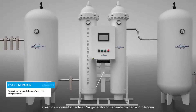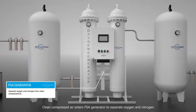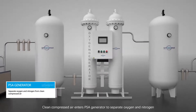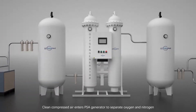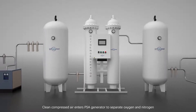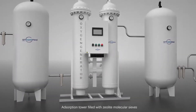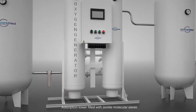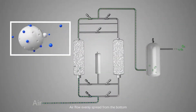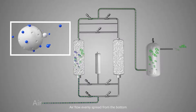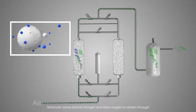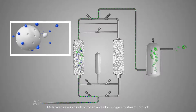Clean compressed air enters the PSA generator to separate oxygen and nitrogen. The absorption tower is filled with zeolite molecular sieves. Air flow spreads evenly from the bottom, and the molecular sieves adsorb nitrogen, allowing oxygen to stream through.